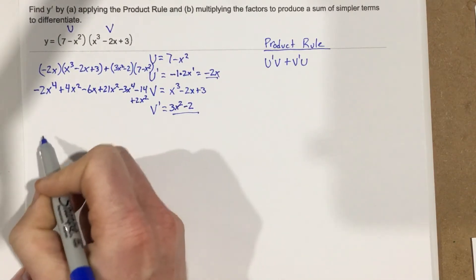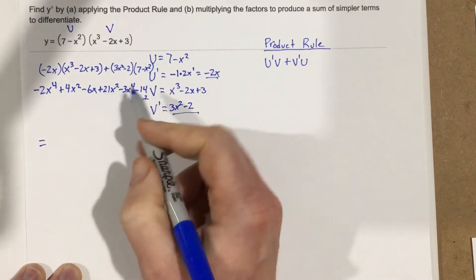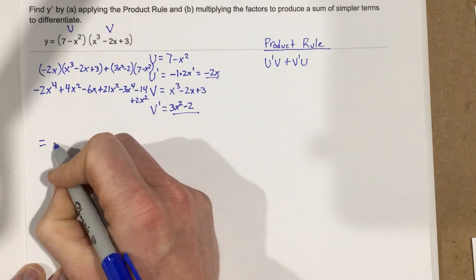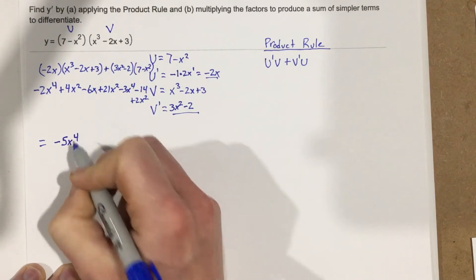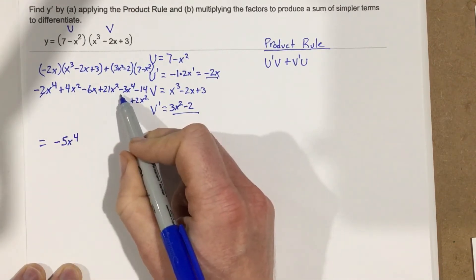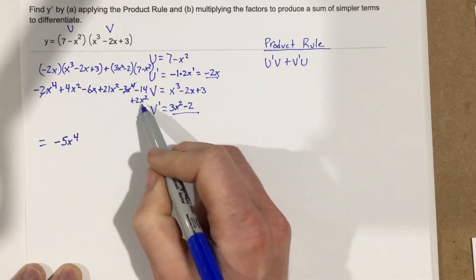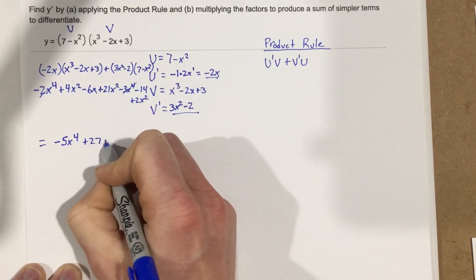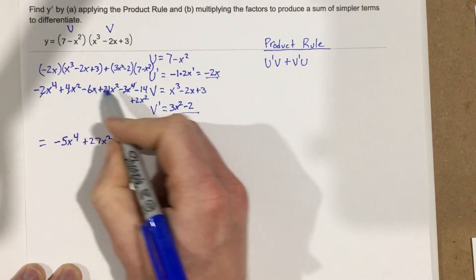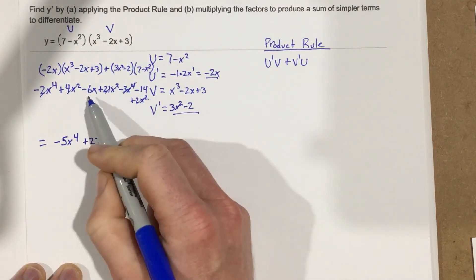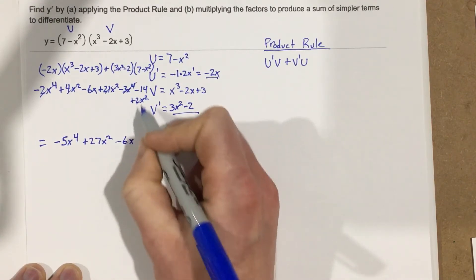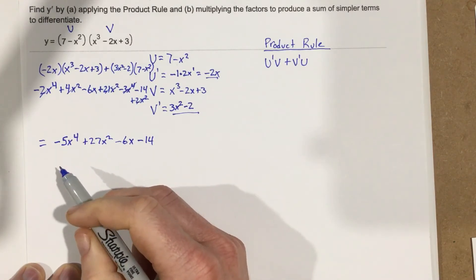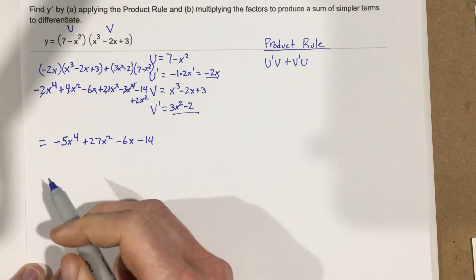Let's combine terms. For the x to the 4th terms: negative 2x to the 4th and negative 3x to the 4th gives negative 5x to the 4th. For the x squared terms: 21x squared plus 2x squared plus 4x squared gives 27x squared. Then we have minus 6x and minus 14. So this is the product rule version of our derivative.